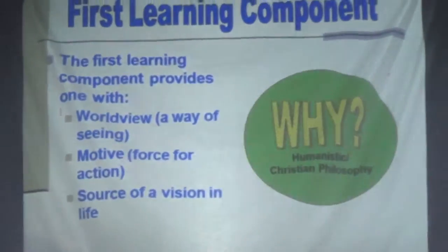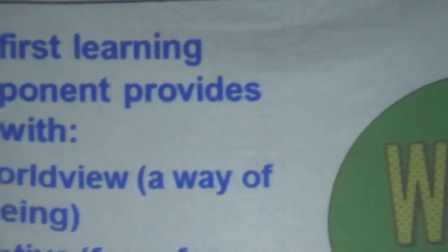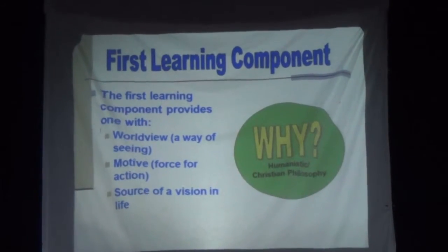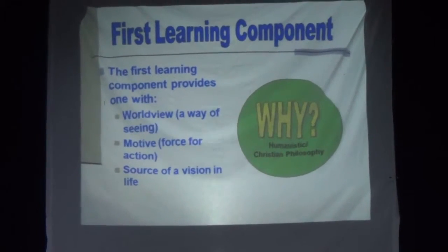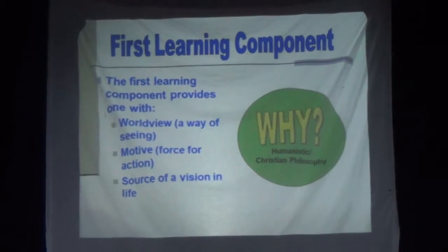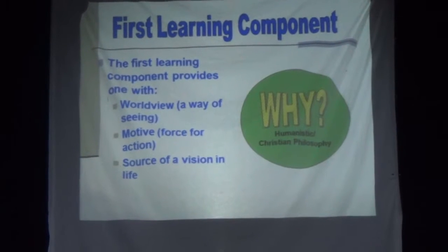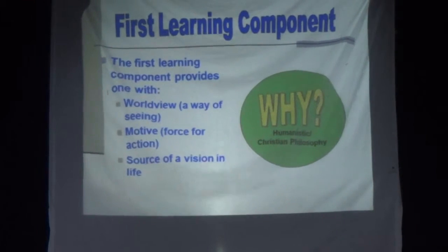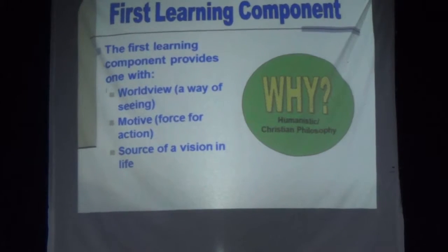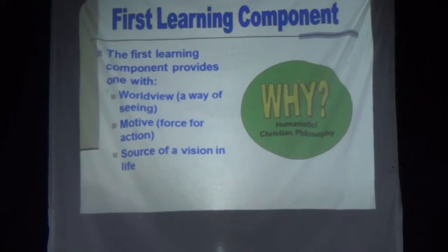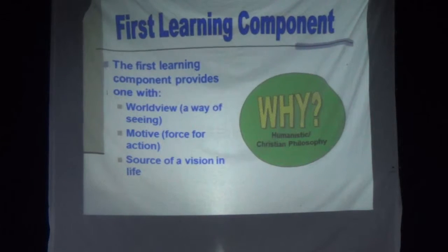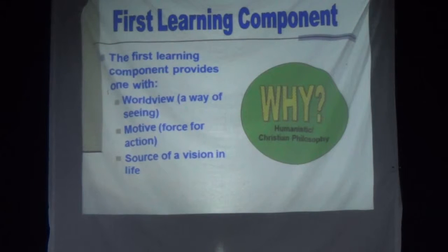The first learning component provides one with a worldview, a way of looking at reality, a way of seeing. Because it's a way of seeing that makes you think in a new way. Seeing leads to: if you have a new way of seeing, you will have a new way of thinking, you will have a new way of feeling, you will have a new way of relating, and then a new way of being. That's the whole transformative process.